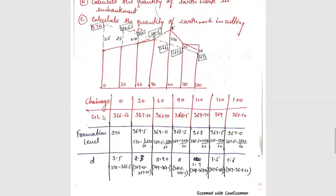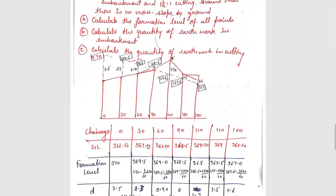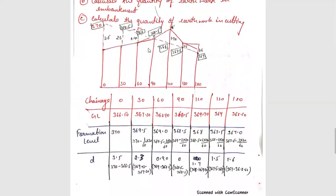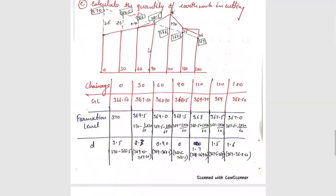First, we give the chainage and ground level GL. We take the first formation level as 370. The next formation level is 370 minus 1 upon 60 into 30 — it is minus because we have a downward falling gradient. Falling gradient means downward gradient, that is why we use the minus sign. We calculate every subsequent FL using the previous FL value.